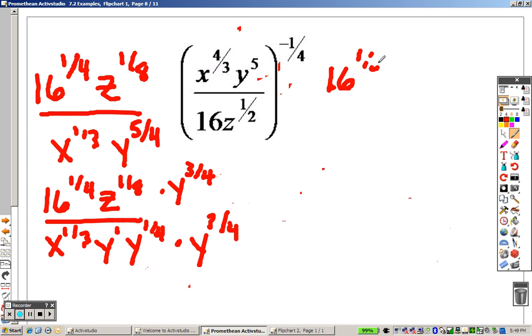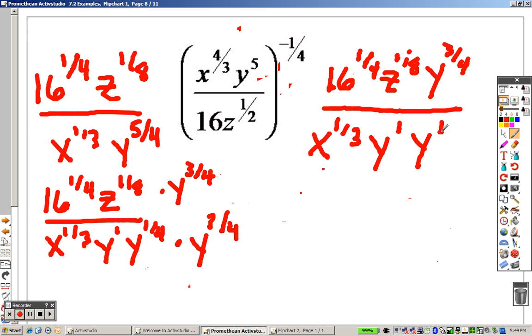So I have 16 to the 1 fourth. I still have my z to the 1 eighth. And now I have y to the 3 fourths. That's all on top. Over, still have x to the 1 third, y to the 1st. And these two have now became another y to the 1st power.